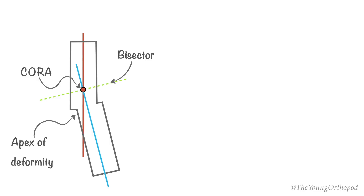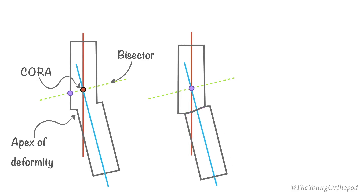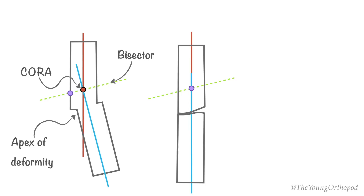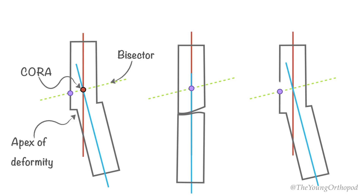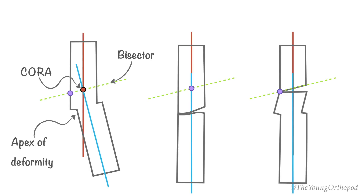The rotation axis to enable correction should be maintained on the bisector of the CORA, but the osteotomy can be sited either at the apex of the angulation or at the same level as the CORA. When the osteotomy is at the apex of the deformity, correction of both translation and angulation is simultaneously accomplished. But when the osteotomy is sited at the CORA, a new deformity is created which correctly balances the malalignment produced from the original site.